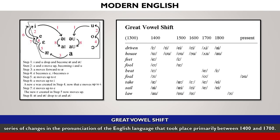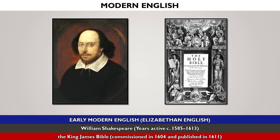Modern English is the form of the English language spoken since the Great Vowel Shift in England, which began in the late 14th century and was completed in roughly 1550. Works of William Shakespeare and the King James Bible are considered to be Modern English, or more specifically are referred to as Early Modern English or Elizabethan English.